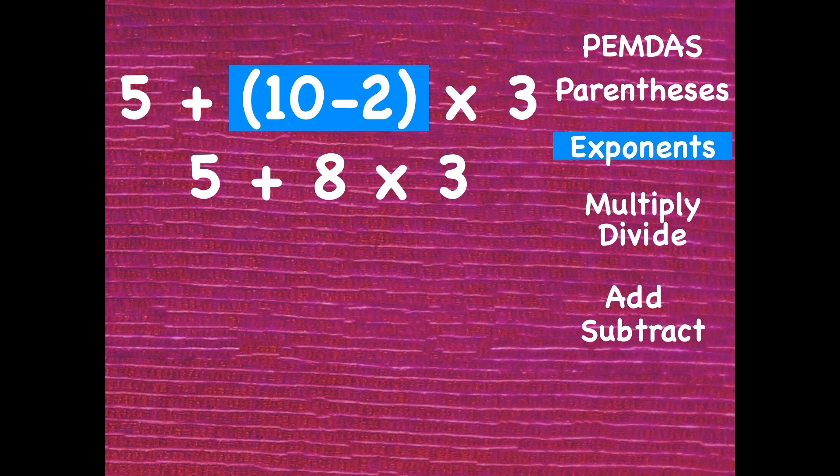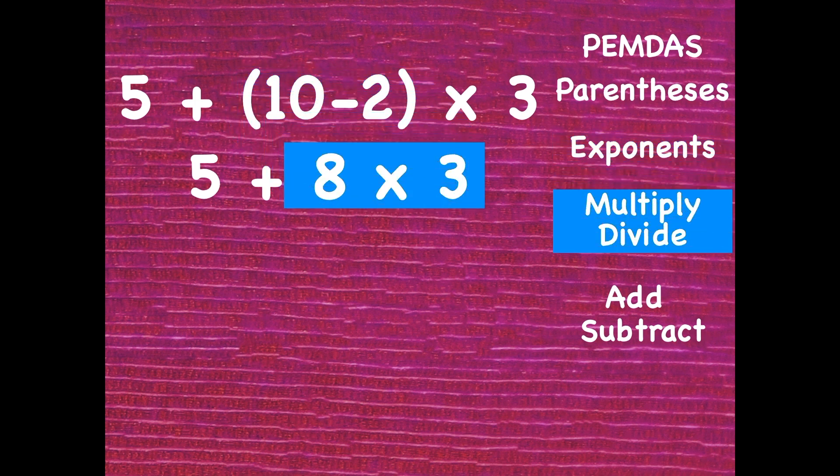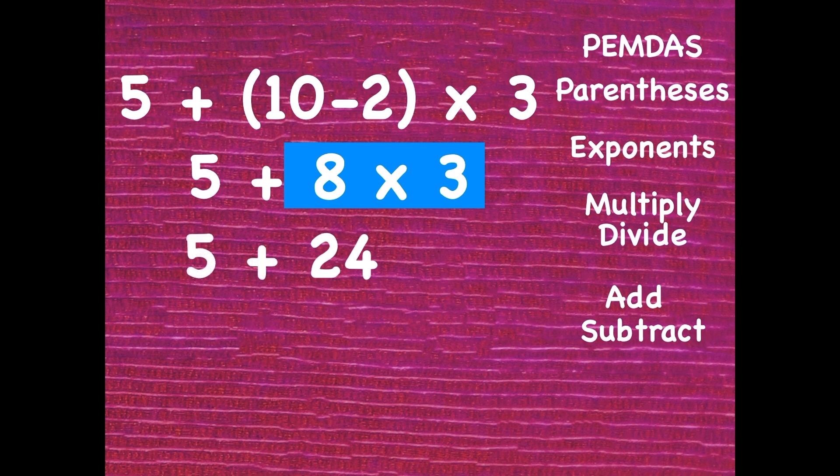Our next step says we've searched for exponents but there aren't any. So now we're going to multiply or divide. Whichever comes first from left to right. We only have multiplication in here so we're going to multiply. 8 times 3 is 24. Write it down and then bring the rest of the problem down. And that's all the multiplication and division there is.